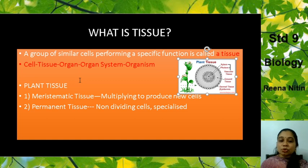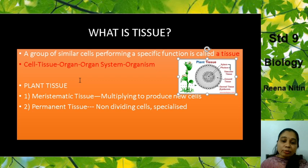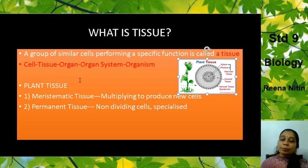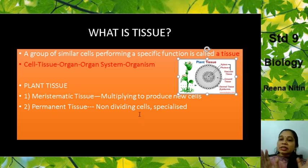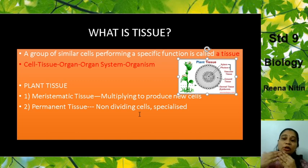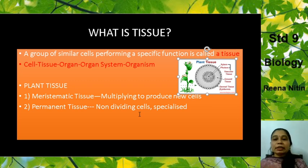What is a meristematic tissue? These tissues rapidly multiply and they produce new cells. New cells are being formed all the time from the meristematic tissue. They are present mostly at the growing tips of the plants where they have to grow rapidly. The second type is the permanent tissue, which are non-dividing. They are already formed, specialized, and have a specific function. They no longer divide and produce more cells. That is the difference between meristematic tissue and permanent tissue.